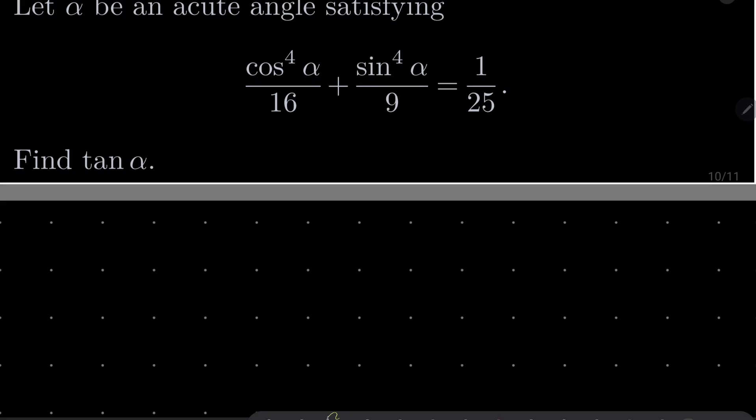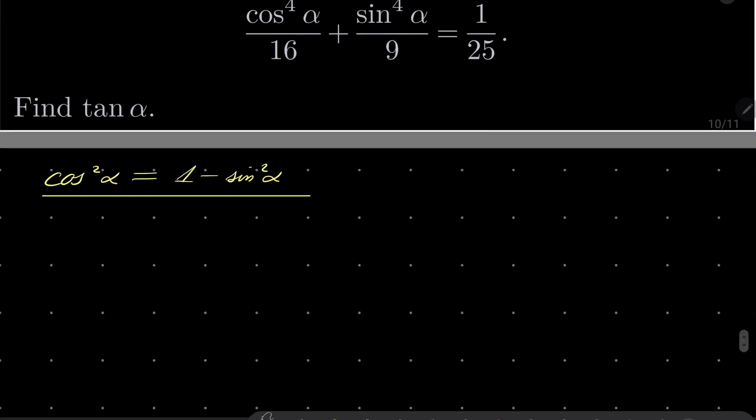Let's eliminate cosine squared. Cosine squared of alpha equals 1 minus sine squared of alpha from the well-known identity. And now let's take our equation: cosine to the fourth power of alpha over 9 equals 1 over 25.